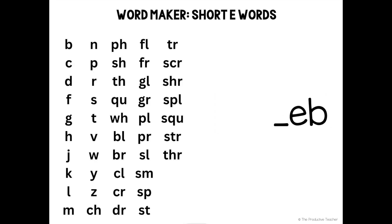Hi, I'm Kate with The Productive Teacher, and today we are going to play the word maker game with the Ebb word family. All one-syllable words have an onset and a rhyme. The onset is the letter or letters that come before the vowel in a word. The rhyme is the vowel and any letters that come after it. In a word family, all of the words have the same rhyme, but they have different onsets. We're going to match onsets and the rhyme to make words in the Ebb word family.